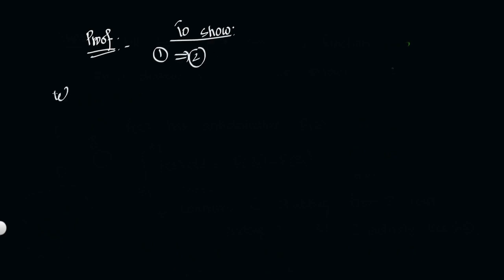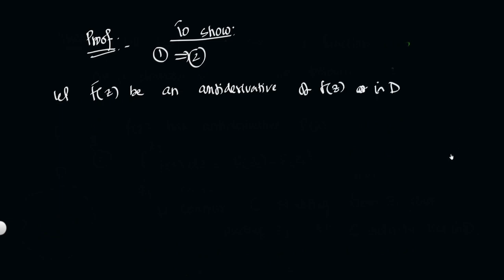Now let us prove 1 implies 2. Let's assume that capital F(z) is the anti-derivative of small f(z) — that is, Statement 1 holds. Since capital F(z) is an anti-derivative of f(z) on the domain D, by the definition of anti-derivative we have F'(z) equal to f(z) for all z belonging to D.